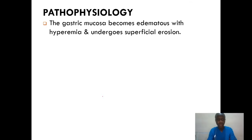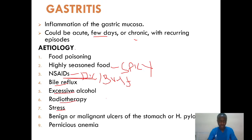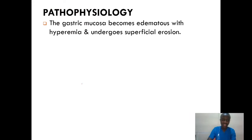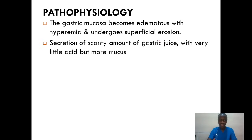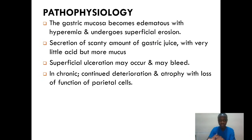Next, pathophysiology. We always have scanty secretion of the gastric juice, which always has little acid but becomes mucus. As a result, we'll have superficial ulceration which may occur, and to some point it might bleed. In chronic gastritis, there's always continued deterioration, atrophy, and loss of function of the parietal cells.